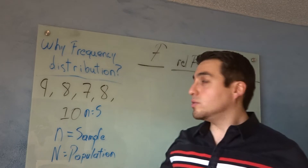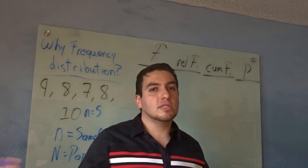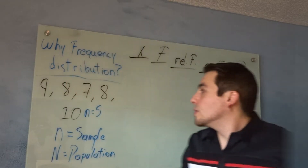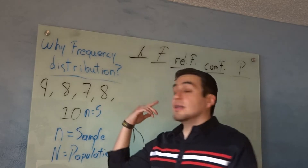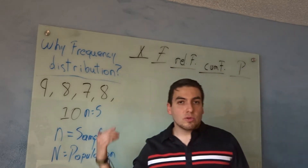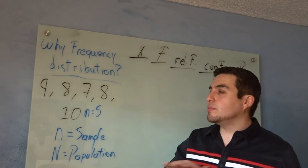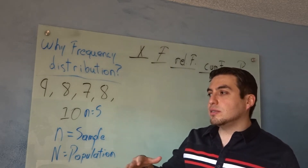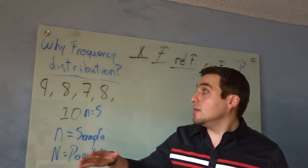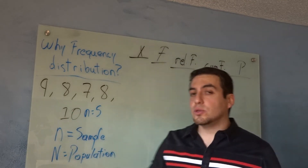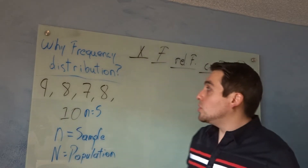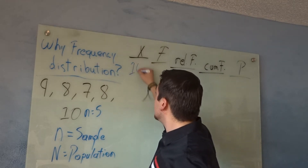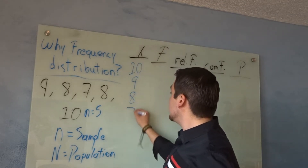The frequency distribution is super simple — just a matter of putting the numbers from highest to lowest. Let's put it on the actual graph. The most common mistake students make is beginning with the lowest number at the top. You always want to begin with the highest number on top. In this case the highest number is 10, so 10 goes on top, then 9, then 8, then 7.